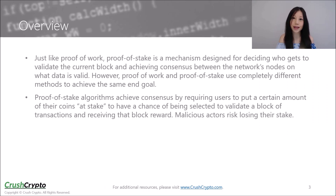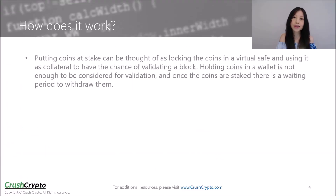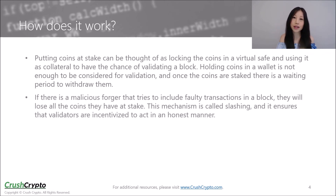Malicious actors risk losing their stake. The more coins that are at stake, the higher chance the user will get to validate the next block and reap the block reward. Proof of Stake validators are called forgers instead of miners. Putting coins at stake can be thought of as locking the coins in a virtual safe and using it as collateral to have the chance of validating a block. Holding coins in a wallet is not enough to be considered for validation, and once the coins are staked, there is a waiting period to withdraw them. If there is a malicious forger that tries to include faulty transactions in a block, they will lose all the coins that they have at stake. This is called slashing and it ensures that validators are incentivized to act in an honest manner.